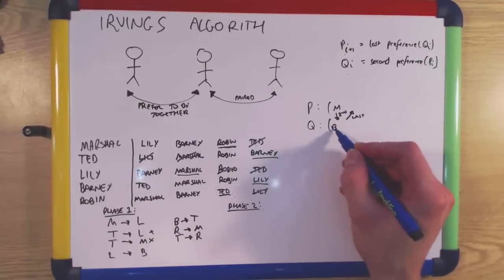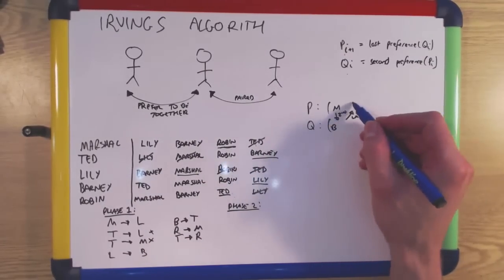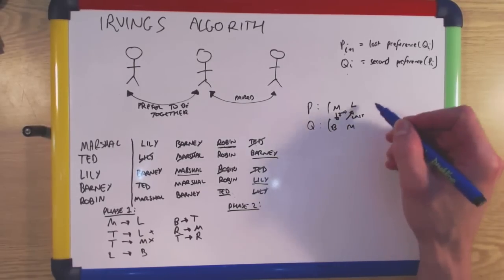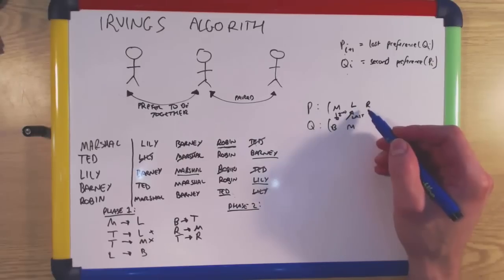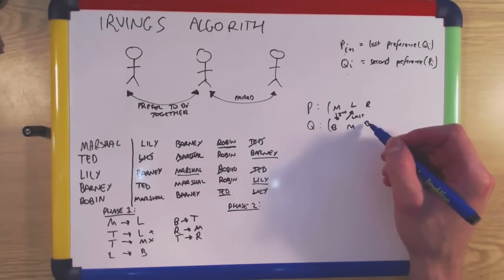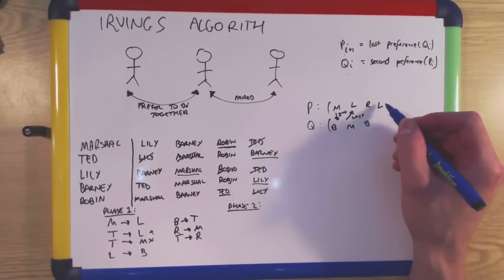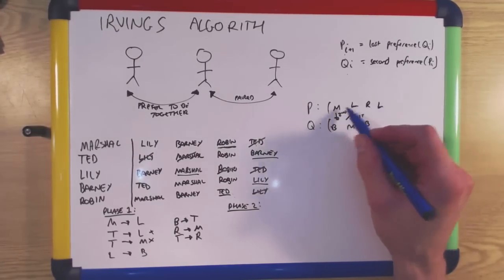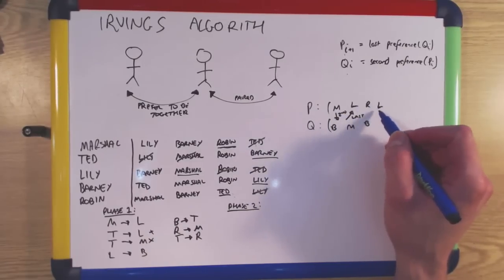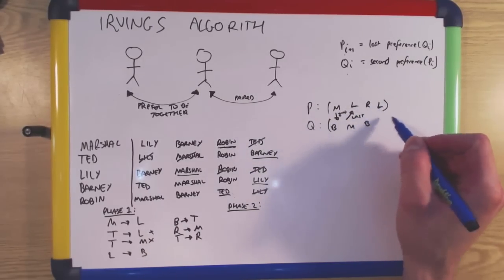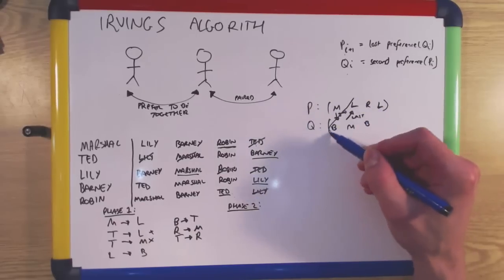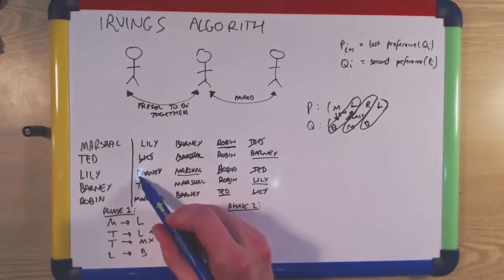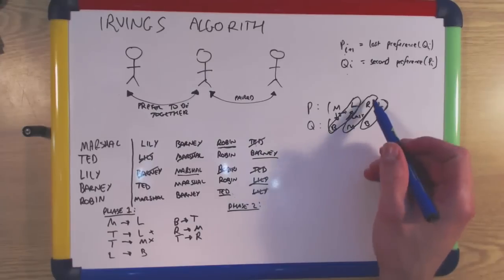The second preference of Marshall is Barney. Barney's last preference is Lily. Lily's second preference is Marshall. Marshall's last preference is Robin. Robin's second preference is Barney. Barney's last preference is Lily. We now terminate because we have had two occurrences of the same element — the cycle is where we see the same person twice. So we reject pairs of elements along these diagonals: Barney rejects Lily and Marshall rejects Robin.